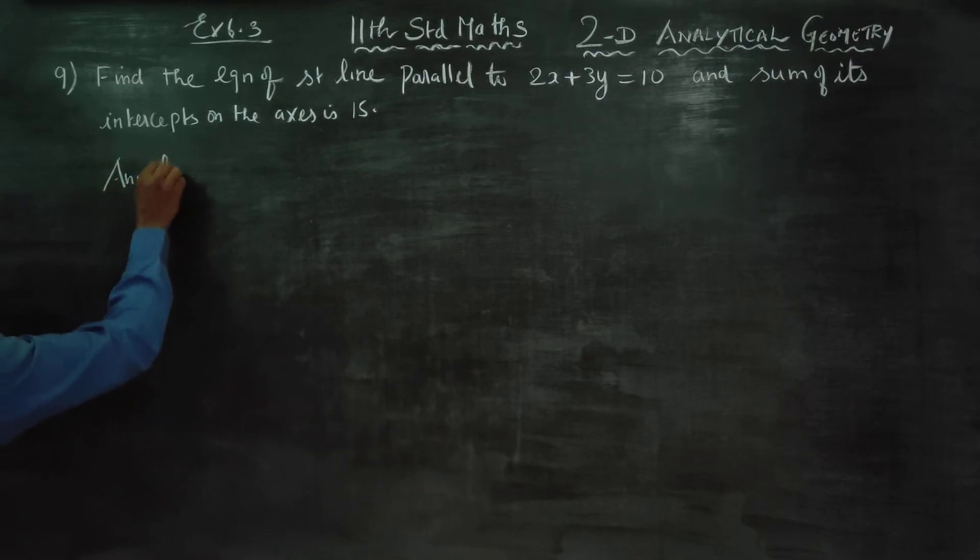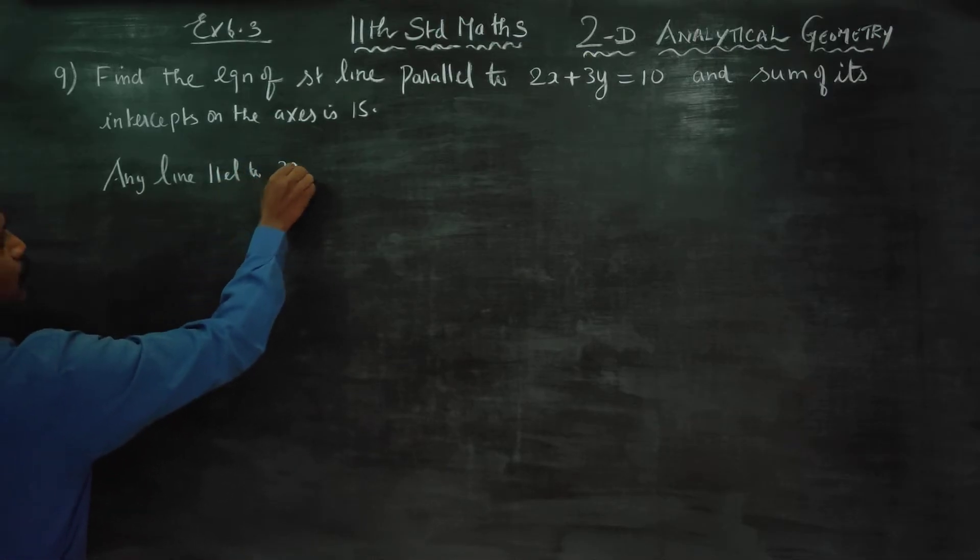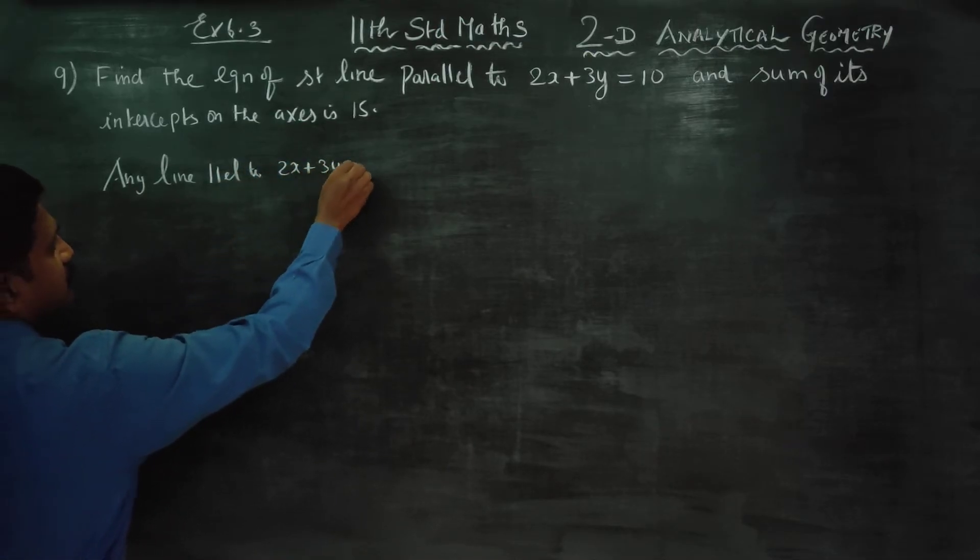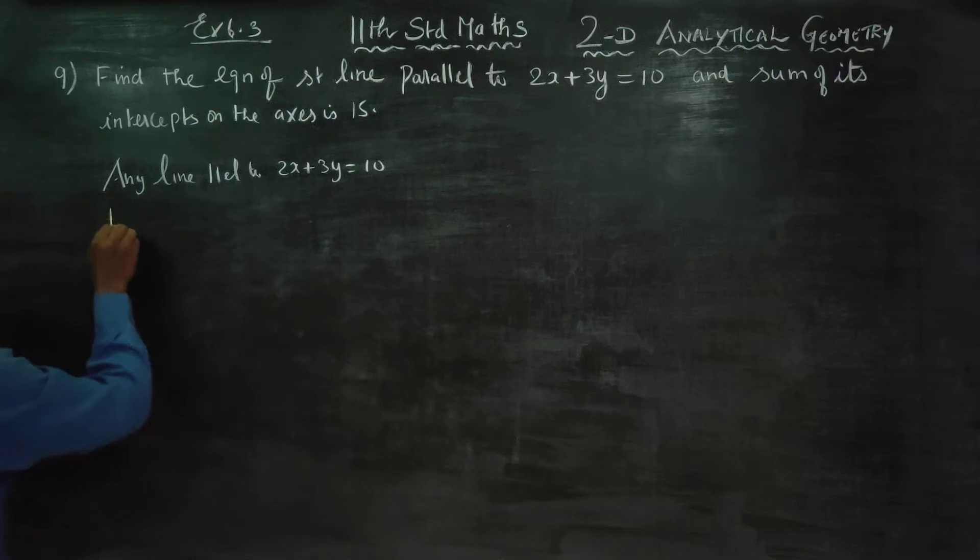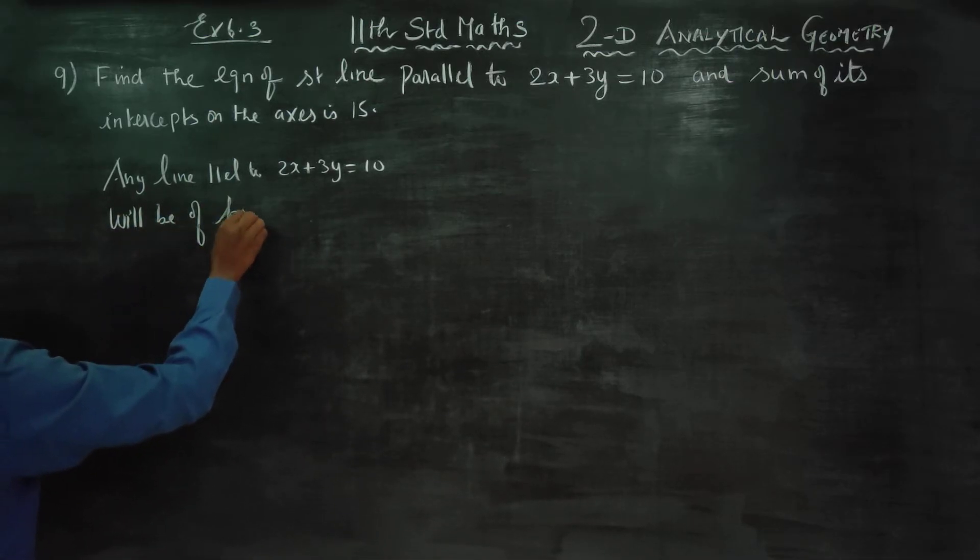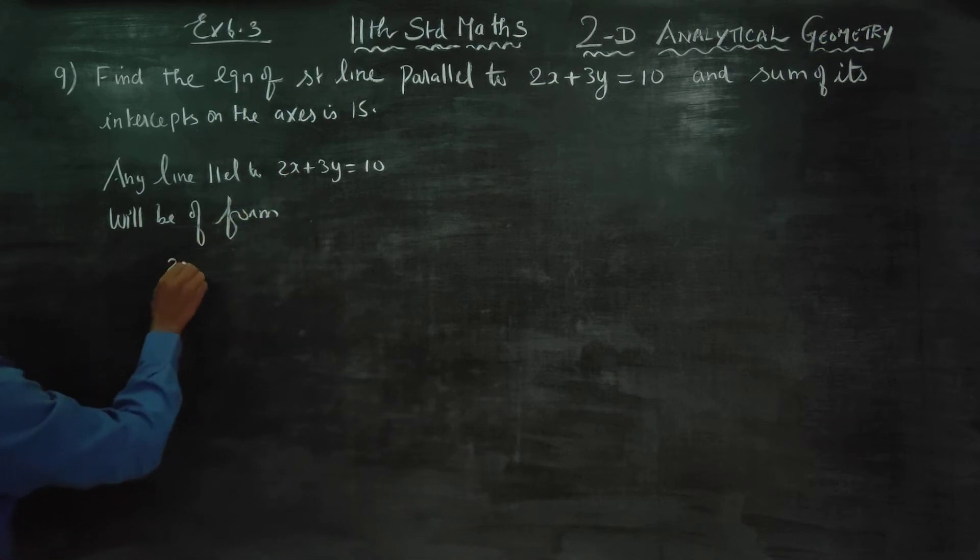Any line parallel to 2x plus 3y equals 10 will be of form where the coefficients of x and y are the same.